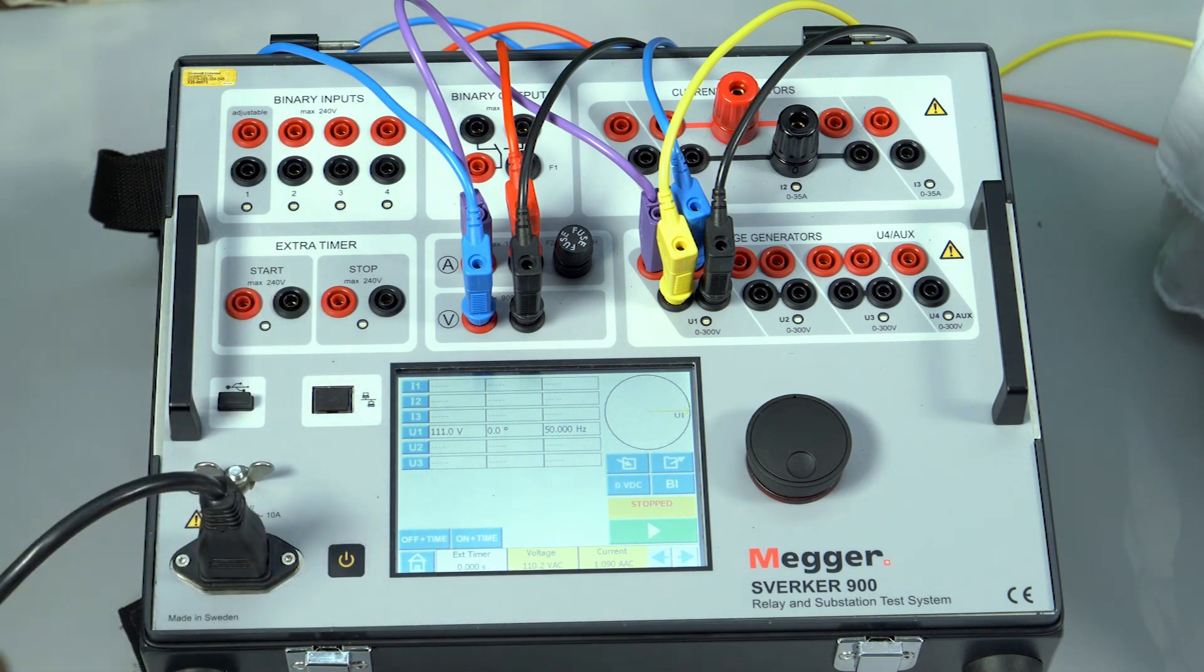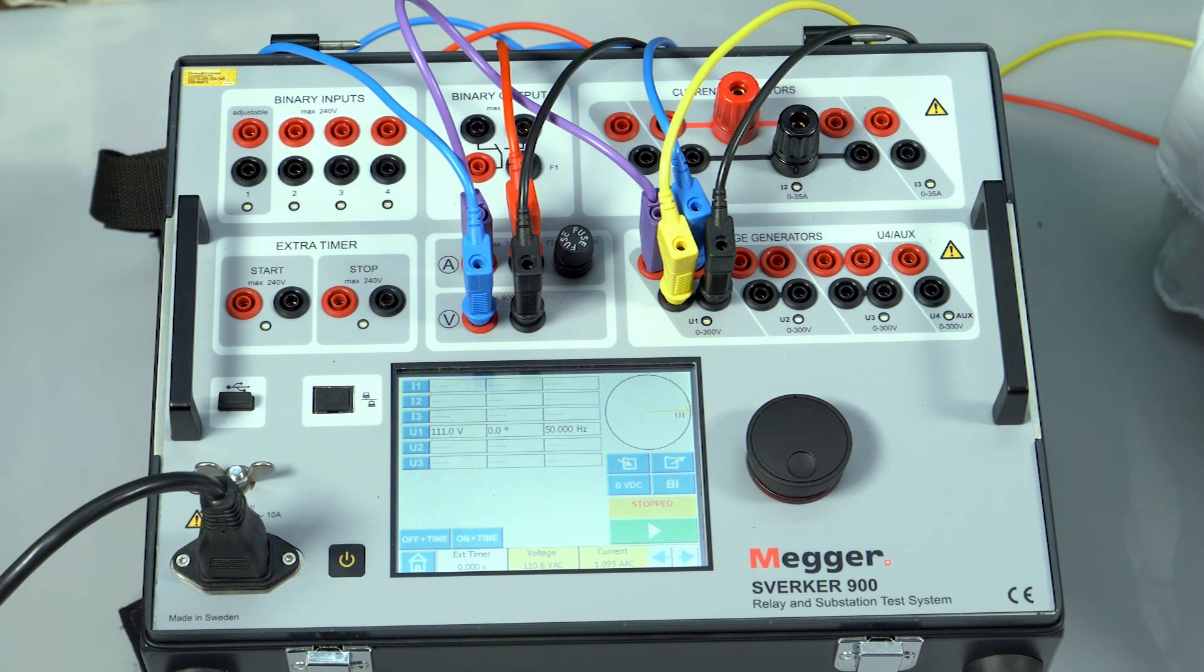Let me inject 111 volts. The voltage and current is recorded here as 110.6 and the current is 1.095. The VA is calculated as 120.262, which is as per the specification.